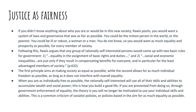Rawls argues that any group of rationally self-interested persons in the original position would come up with two basic rules for government. The first is equality in the assignment of basic rights and duties — found on page 543. Each person is to have an equal right to the most extensive scheme of basic equal liberties compatible with a similar scheme of liberties for others.